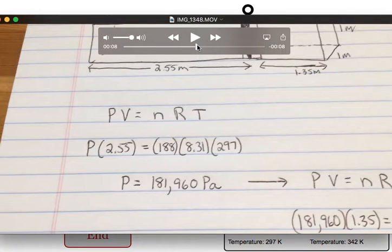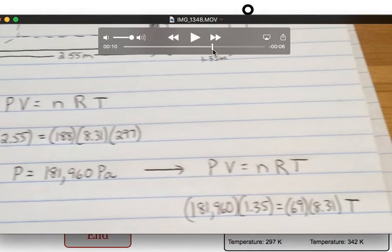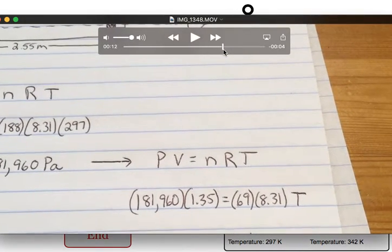You then get the pressure on the left-hand side, and in order for the piston to remain at rest, we set that equal to the pressure on the right-hand side. So we use the same pressure on both sides and figure out the new temperature on the right.